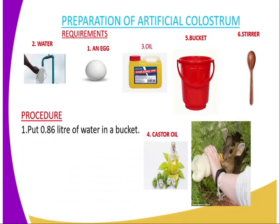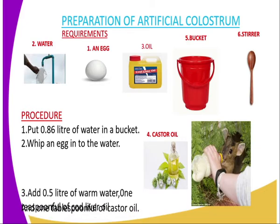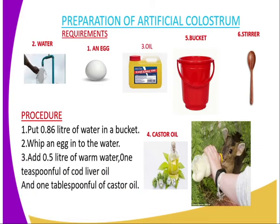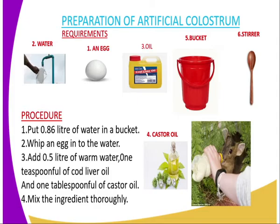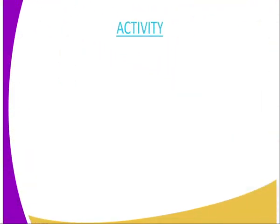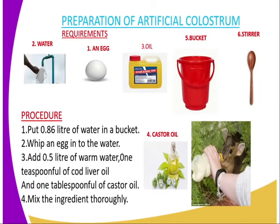Now the procedure. Number one, put 0.8 liters of water (equivalent to 860 cubic centimeters) in a bucket. Number two, whip an egg into the water. Number three, add 0.5 liters of warm water, one teaspoon of cod liver oil, and one tablespoon full of castor oil. Mix the ingredients thoroughly. After mixing the ingredients thoroughly, the colostrum is ready to be used.